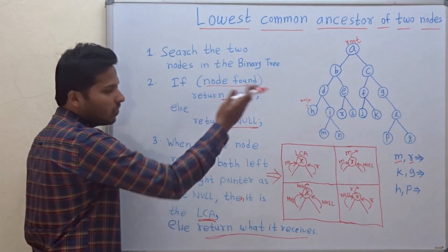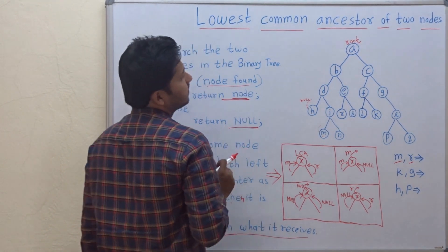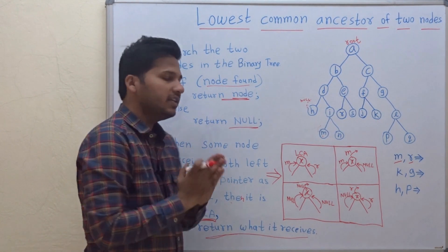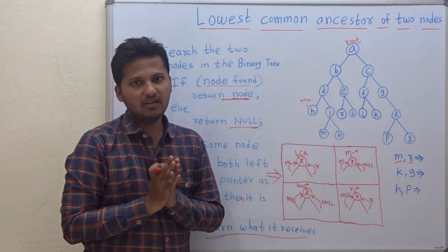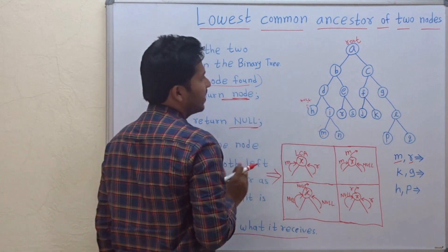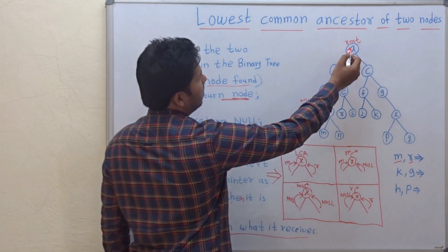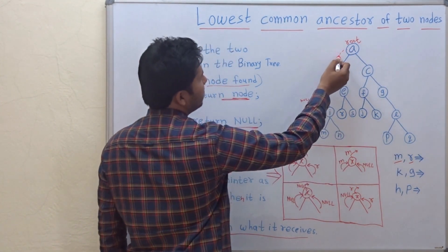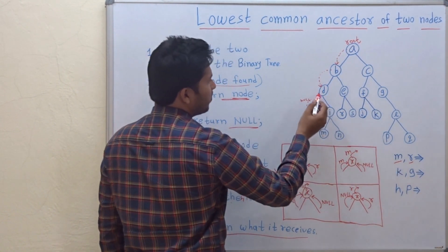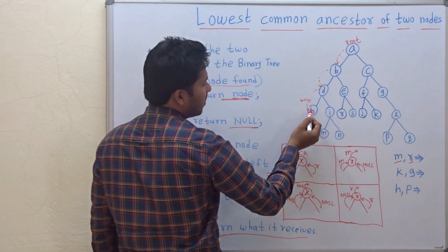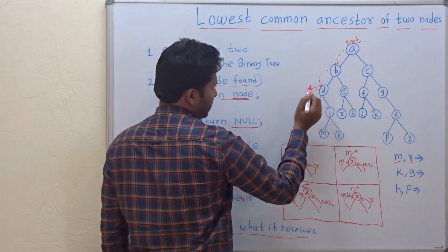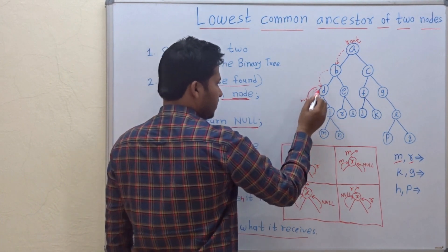Let's execute this algorithm on this binary tree. We'll search for M and R using in-order traversal, which I've explained in previous videos. A is not equal to M or R, so go to the left. D is not equal to M or R, so go to the left. H is not equal to M or R; go to the left but left is NULL, so we return. H will return NULL.